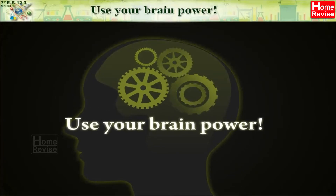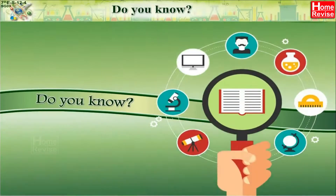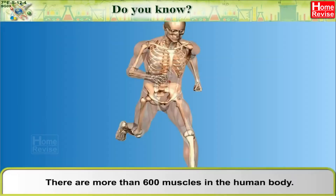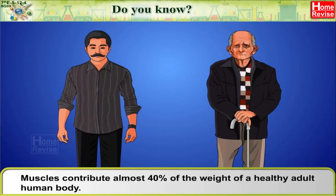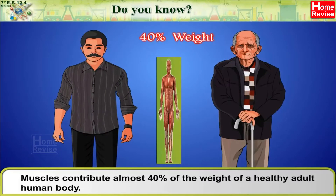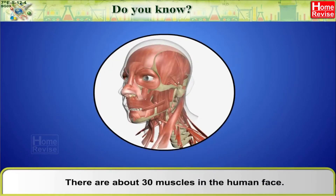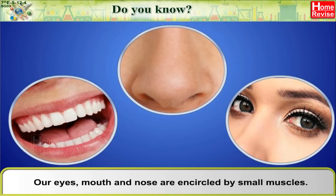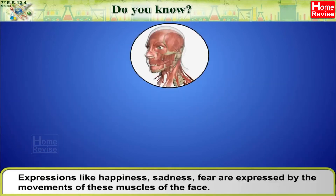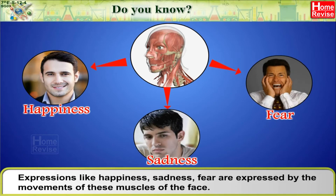Use your brain power: Which parts of our body are made up only of muscles? There are more than 600 muscles in the human body. Muscles contribute almost 40% of the weight of a healthy adult human body. There are about 30 muscles in the human face. Our eyes, mouth, and nose are encircled by small muscles. Expressions like happiness, sadness, and fear are expressed by the movements of these facial muscles.